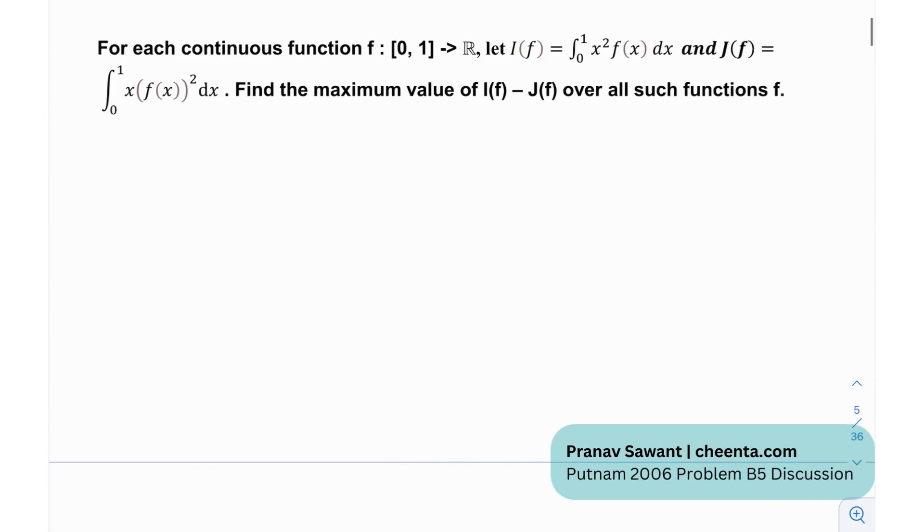So let's see what they've given. They've told us for each continuous function f defined from [0, 1] to real numbers, let i(f) be defined as this integral and j(f) be defined as this other integral. Find the maximum value of i(f) minus j(f) for all such functions f.